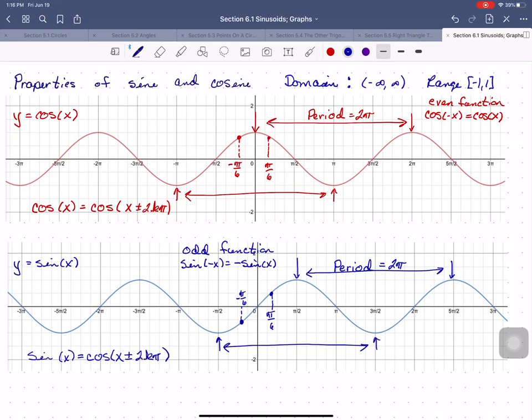Now remember, last chapter we discovered that cosine of π/2 minus some angle equals sine of that angle. We can rewrite this to say that sine of θ equals cosine of (θ minus π/2). If you remember your transformations, this suggests we can shift